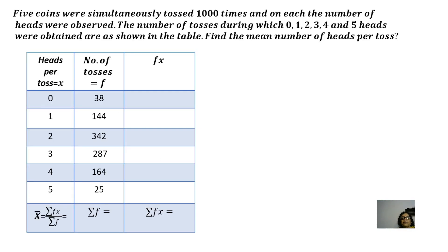The next question: five coins were simultaneously tossed 1000 times and on each toss the number of heads was observed. The number of tosses during which zero, one, two, three, four, and five heads were obtained is shown in the table. We need to find the mean number of heads per toss. The total frequency is already given as 1000. We find the product of each number of heads with its frequency.